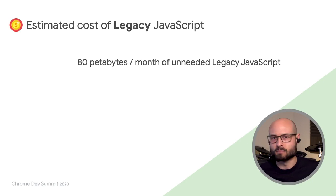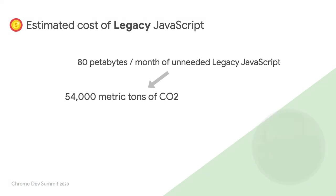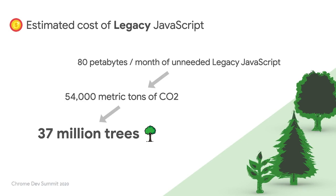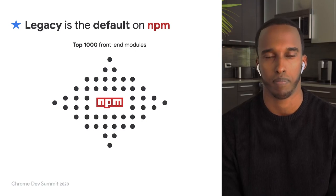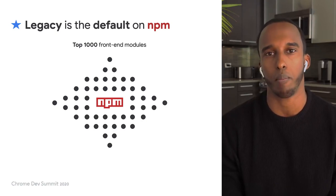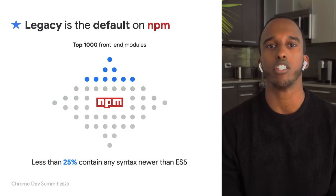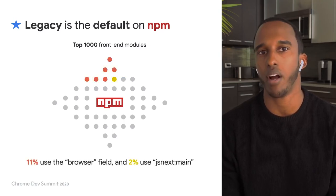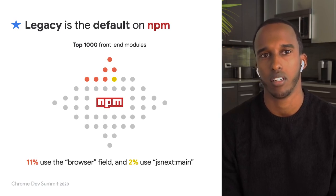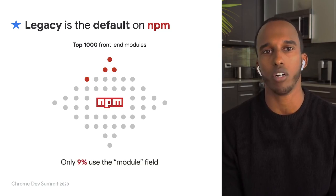That extra bandwidth — shipping unnecessarily polyfilled and transpiled code — produces something like 54,000 metric tons of carbon dioxide into the atmosphere. We'd have to plant 30 million trees to offset that much CO2. These are obviously super approximate numbers, but they kind of help paint a picture of the scale of the problem. A big part of that scale comes from how prevalent this issue is on NPM. If we take a look at the top 1,000 front-end modules on the NPM registry, the median syntax version is ES5. The average is also ES5. In fact, less than 25% contain any syntax newer than ES5. Only 11% of modules use the browser field, and 90% of these point to ES5. 2% of modules have a jsnext:main field, and all but one are ES5. Only 9% of modules use the module field.